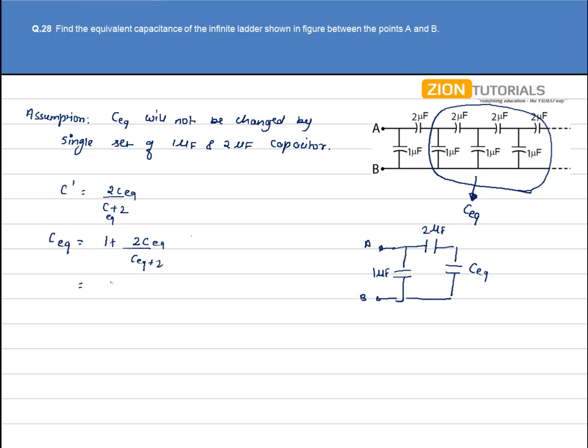On solving we get 3C equivalent plus 2 divided by C equivalent plus 2 equals C equivalent. Here C equivalent times C equivalent plus 2 equals 3C equivalent plus 2.